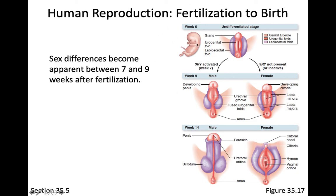Once a baby hits about six weeks, the X or Y chromosome becomes activated. The Y chromosome carries very little useful information other than the SRY gene — the testis-determining factor. That's about the only thing on the Y chromosome, and it tells the body to develop testicles instead of developing a vagina.